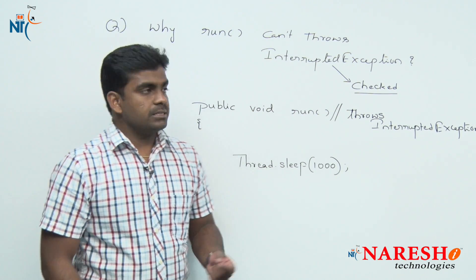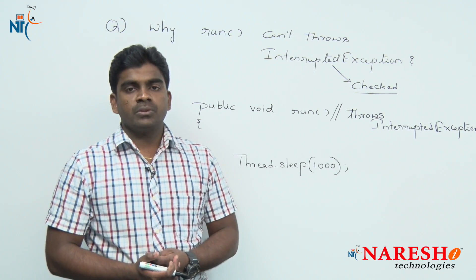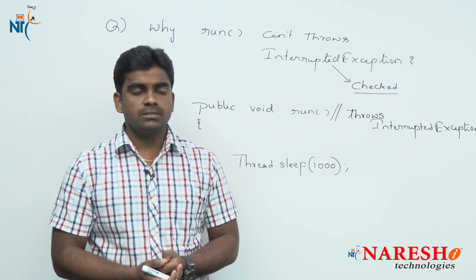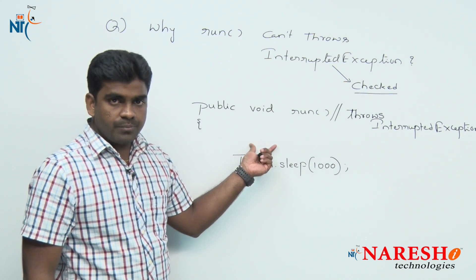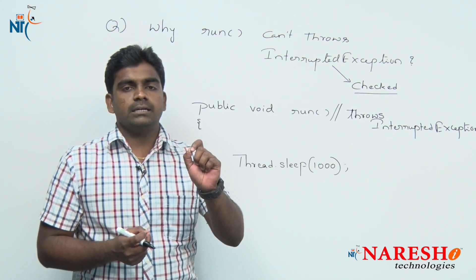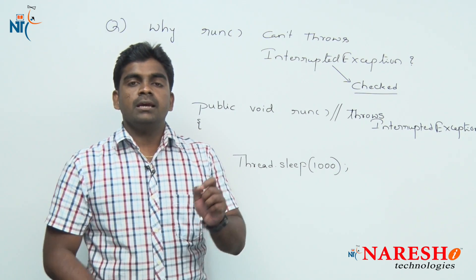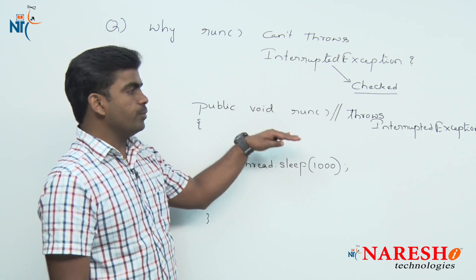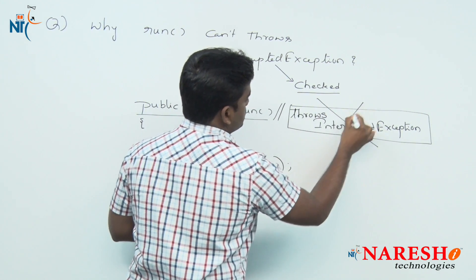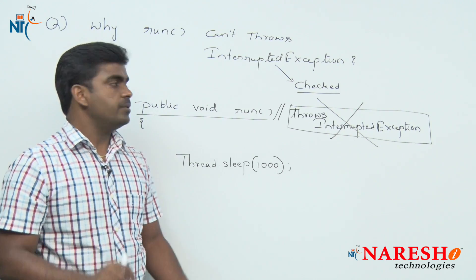Why? What is the reason? The reason is that the run method is an overridden method. The run method is available in the Runnable interface, and it is implemented by the Thread class with an empty definition. One syntactical rule of overriding is that you should not change the prototype of the method. How it is defined in the Runnable interface, in the same way you should override it. You have to write only 'public void run' — you should not add extra prototype. This is not allowed, so you cannot use throws; the only option is you must handle it in the run method.